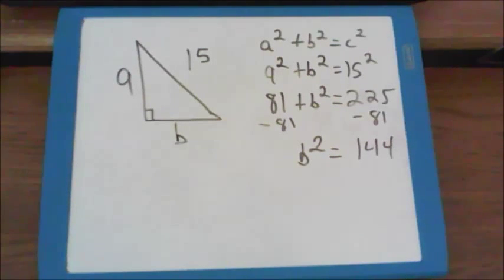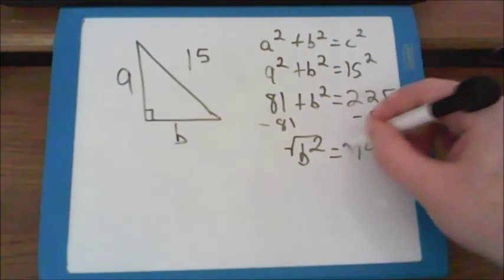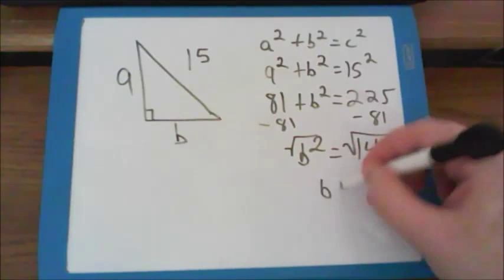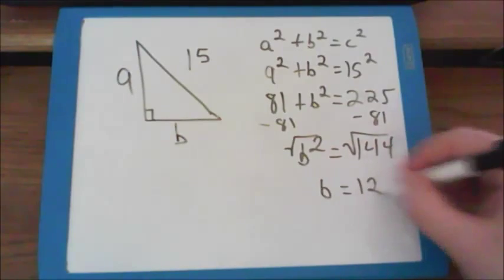Again, we will only do this subtraction if we're looking for either a or b. It's only when we're looking for c that we do the addition step. But I'm still not done on this question, because I don't want to know what b squared is worth. I still have to take the square root. So when I take the square root of one hundred and forty-four, I get that b is equal to twelve units.